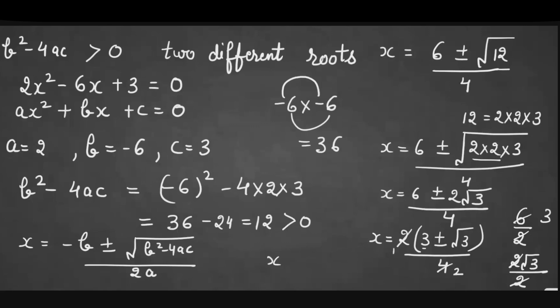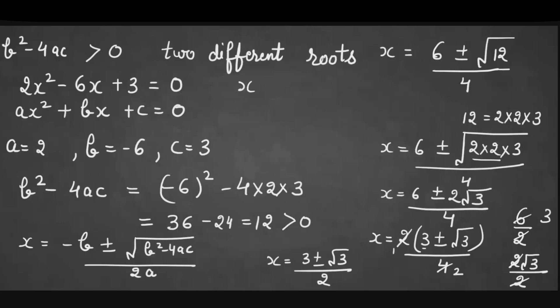So x = (3 + √3)/2 or x = (3 - √3)/2. These two roots are not the same — they are different, confirming that when b² - 4ac > 0, we get two different roots for the quadratic equation.